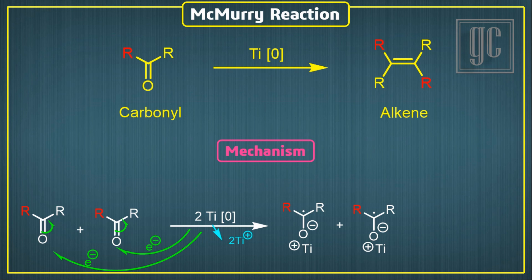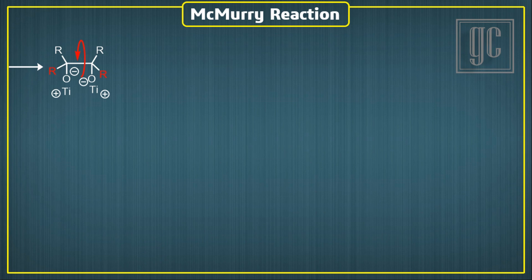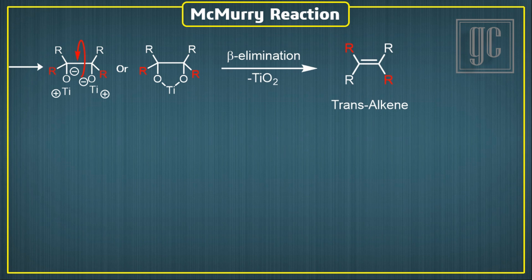Free electrons of two intermediates interact and form a single bond. This intermediate can rotate due to non-restricted free rotation with respect to the carbon-carbon single bond, and because of that, trans-product forms as the major product in this reaction. This intermediate is also represented as a cyclic structure. In the end, beta elimination takes place, and trans-alkene forms as the major product.